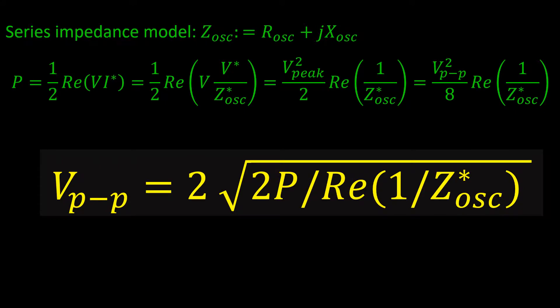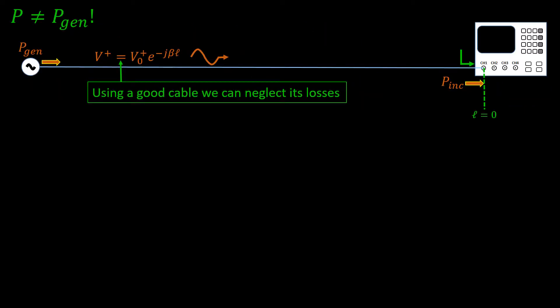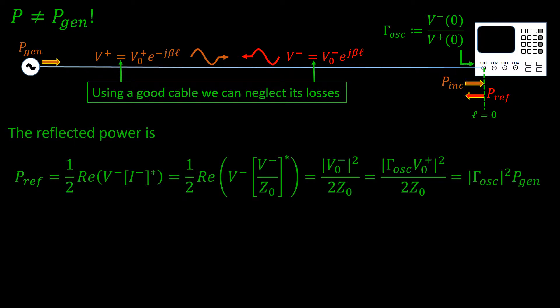Finally, we can take out the peak-to-peak voltage from the equation to get the expression we will use. But we still need to comment on a small detail regarding the power we are using. You should not confuse this power with the power of the generator. Our oscilloscope might present mismatches which will produce a reflected power. We can estimate this reflected power using voltage and current waves, where the amplitude of the reflected voltage is expressed in terms of the incident one by means of the reflection coefficient at the oscilloscope input, which we call gamma sub os.